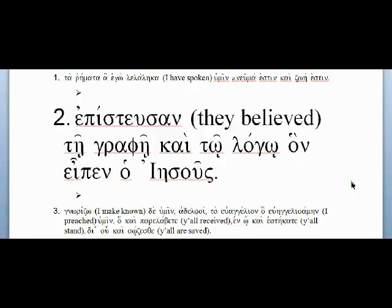This is BBG chapter 14, sentence 2 — this one should tax your brain a little bit less than sentence 1. Let's start working through it. He gives you the verb which incorporates the subject: 'they believed.' Then you have two objects: τῇ γραφῇ καὶ τῷ λόγῳ — the scripture and the word.